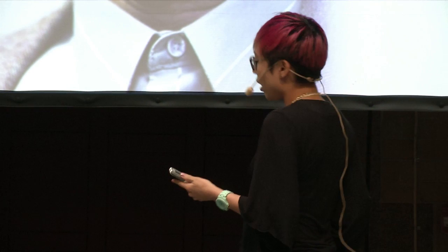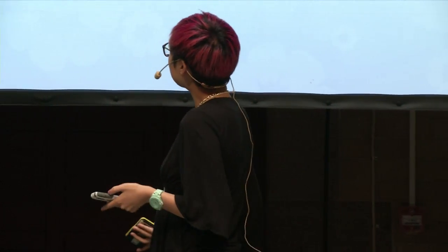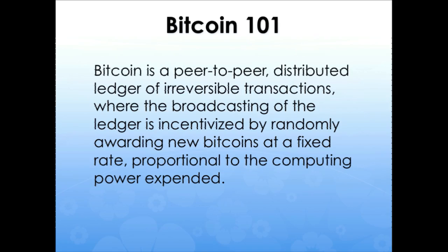But let's talk about Bitcoin 101. In one sentence: Bitcoin is a peer-to-peer distributed ledger of irreversible transactions, where the broadcasting of the ledger is incentivized by randomly awarding new Bitcoins at a fixed rate, proportional to the computing power expended. Really simple.